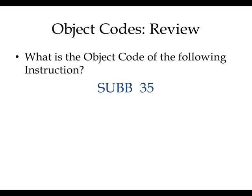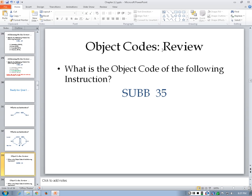Once we know the addressing mode, the next step is how to find the object code. To find the object code, we get a code for the opcode and another number for the operand — two separate things. So how do we know what the object code will be for the opcode? We go back to the set of instructions. Let's go back to the set of instructions and start from there.